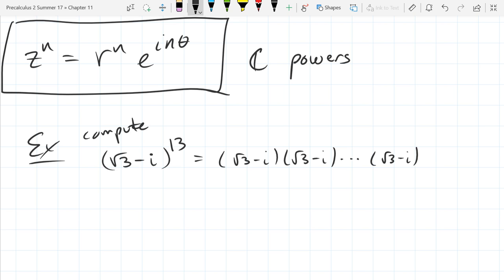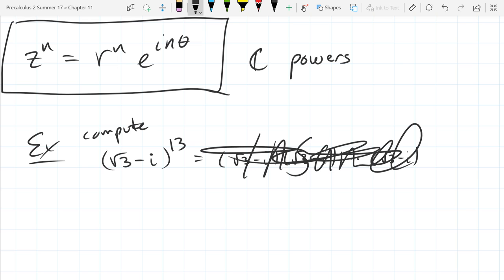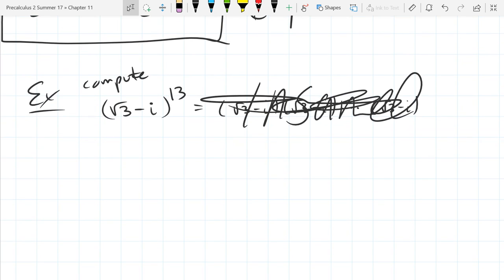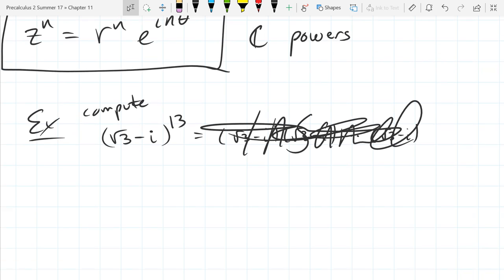We just saw how hard it was to just multiply two of these, and then we're gonna have a lot of multiplications ahead of us if we try to do this. So this would be insane. Well, what we just saw...